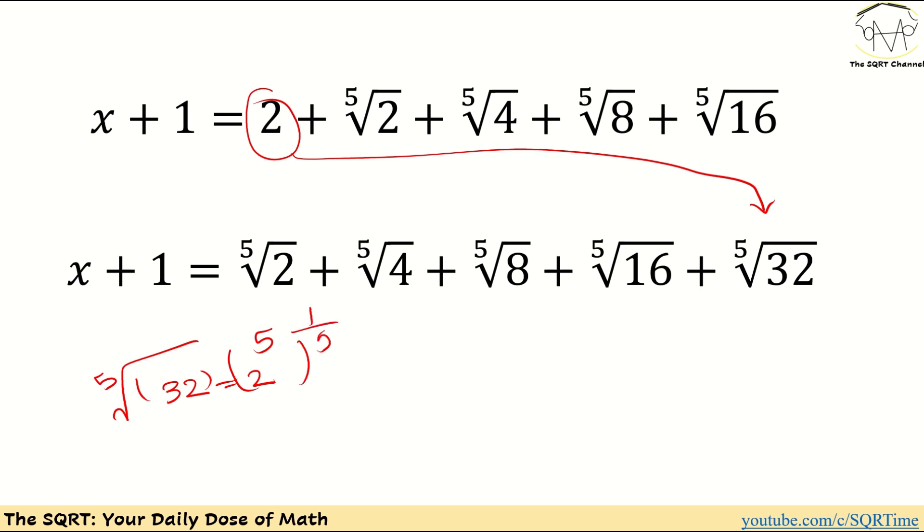we can write it as two to the power of five to the power of one over five which is going to be two. So I can do this and based on that we have sigma the fifth root of two to the power of two to the power of i for i equal to one to five and this is defined as x plus one.